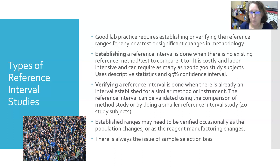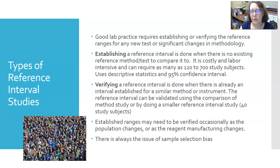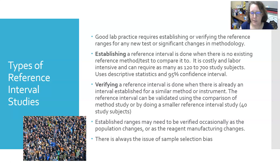Establishing a reference interval is often costly and labor intensive. It can require as many as 120 individuals at minimum, or as many as 700 or more study subjects. Once you have your full sample — whether 120, 500, or 700 subjects — you can use descriptive statistics to establish the mean and 95% confidence interval for the range, or determine positive/negative cutoffs. Verifying a reference interval is done when an interval has already been established for a similar method or instrument.